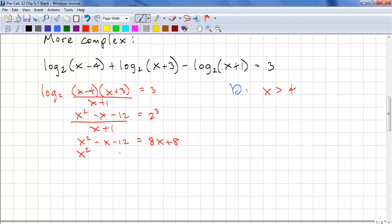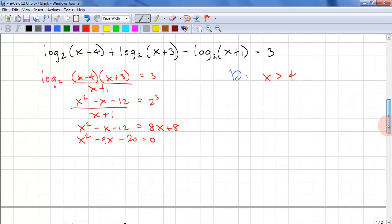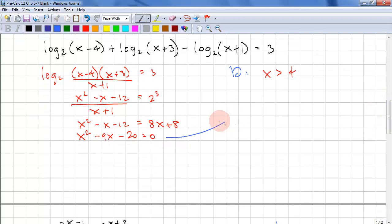Bring everything over to one side. We have x² - 9x - 20 = 0. So remember our other rules from pre-calc 11.